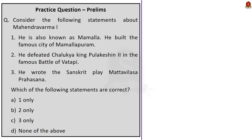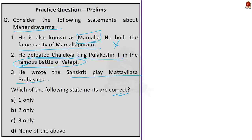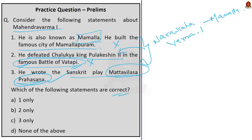Look at the third question. Consider the following statements about Mahendravarman I. Statement 1: he is also known as Mamalla and built the famous city of Mamallapuram. Statement 2: he defeated Chalukya king Pulakesin II in the famous battle of Vatapi. Statement 3: he wrote the Sanskrit play Mattavilasa Prahasana. The first two statements are wrong. Both statements are not about Mahendravarman I, but his son Narasimhavarman I. Narasimhavarman I is also known as Mamalla and built Mamallapuram. Mahendravarman was defeated by Pulakesin II in the battle of Pullalur. To avenge his father's defeat, Narasimhavarman I defeated Pulakesin II in the battle of Vatapi. Since he captured Vatapi from the Chalukyas, he is also called Vatapi Kondan. The third statement is correct. Mahendravarman I wrote the Sanskrit play Mattavilasa Prahasana. Our final answer is option C, 3 only.